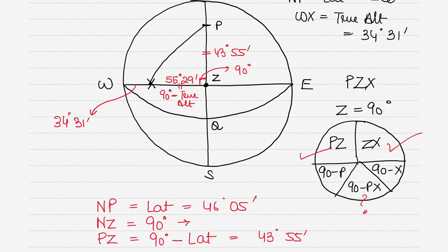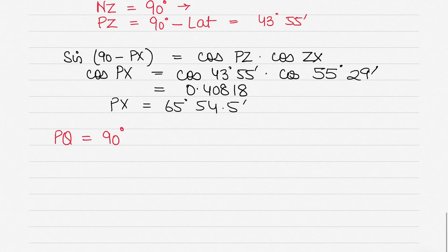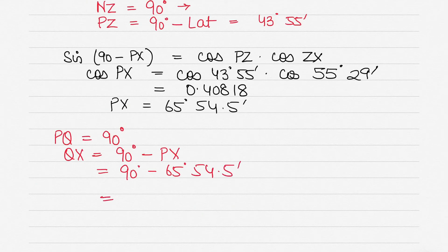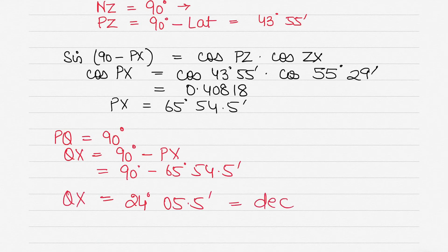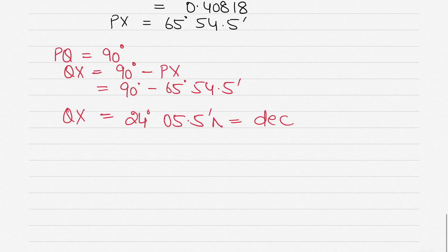PX is the polar distance. Declination = 90° − PX = 90° − 65°54.5' = 24°05.5'. The declination is the angular distance from the celestial equator (Q) to the body (X). Since X is north of the celestial equator, the declination is 24°05.5' North.